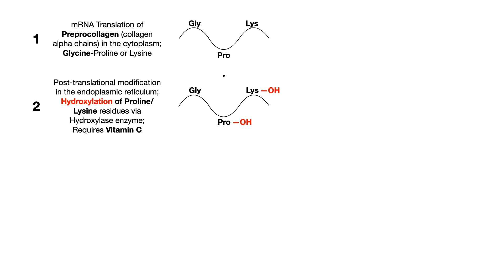In step two, you undergo post-translational modification, and this occurs in the endoplasmic reticulum. Specifically, we hydroxylate the proline and lysine residues via the enzyme hydroxylase. It's very important to note that this step requires vitamin C. You absolutely need vitamin C in order to hydroxylate proline and lysine residues. So step two: post-translational modification in the endoplasmic reticulum, specifically hydroxylation of proline and lysine, requiring vitamin C, with the enzyme hydroxylase.